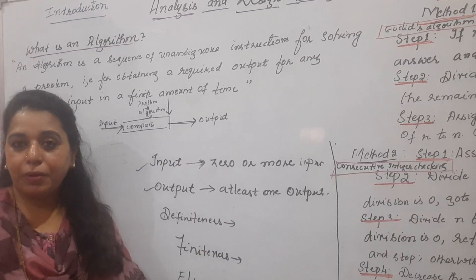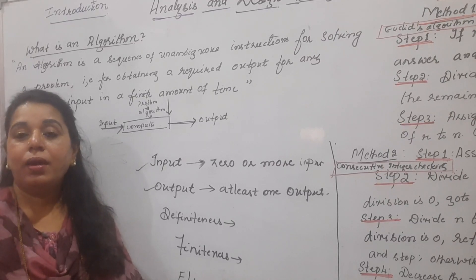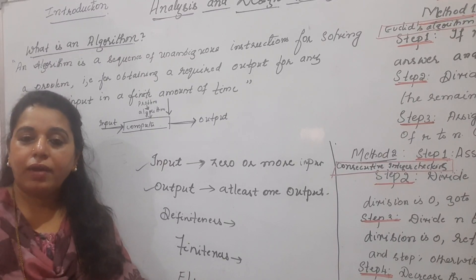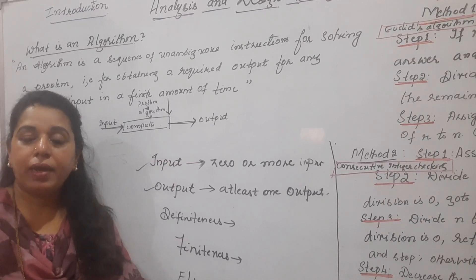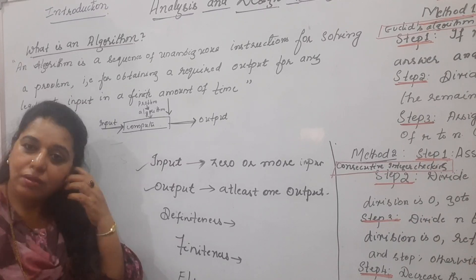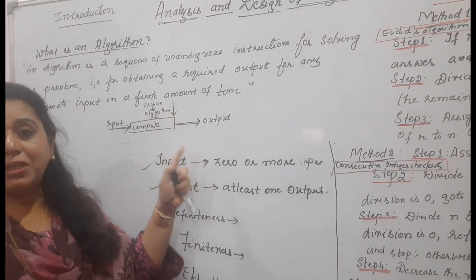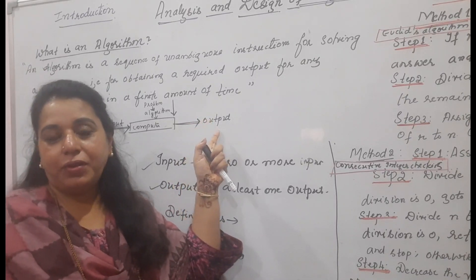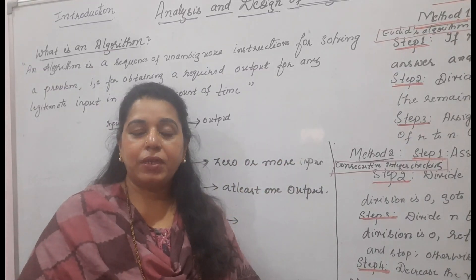Feasibility is also a very important characteristic. You are writing an algorithm and finally a programmer is going to implement and execute it. Unless you know that this algorithm will work under the existing infrastructure — meaning you have the required hardware, the software, and the computational device available — then what is the use of preparing that algorithm? So feasibility ensures the algorithm is practically implementable. This definition covers all these characteristics, so write this definition in your exam.